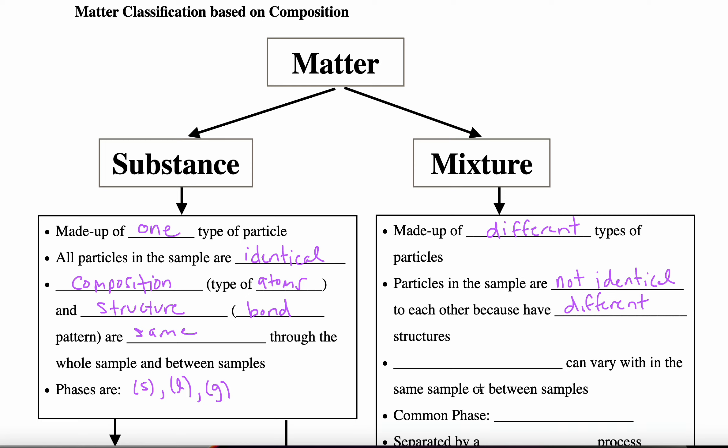Also, within a mixture, the composition can vary. So it can vary within the same sample or between samples. In chemistry, there are some different phases other than solid, liquid, and gas. But the one that we tend to focus on is the phase aqueous. So any substance that uses the term aqueous means it is a mixture, that that substance has been mixed with water.